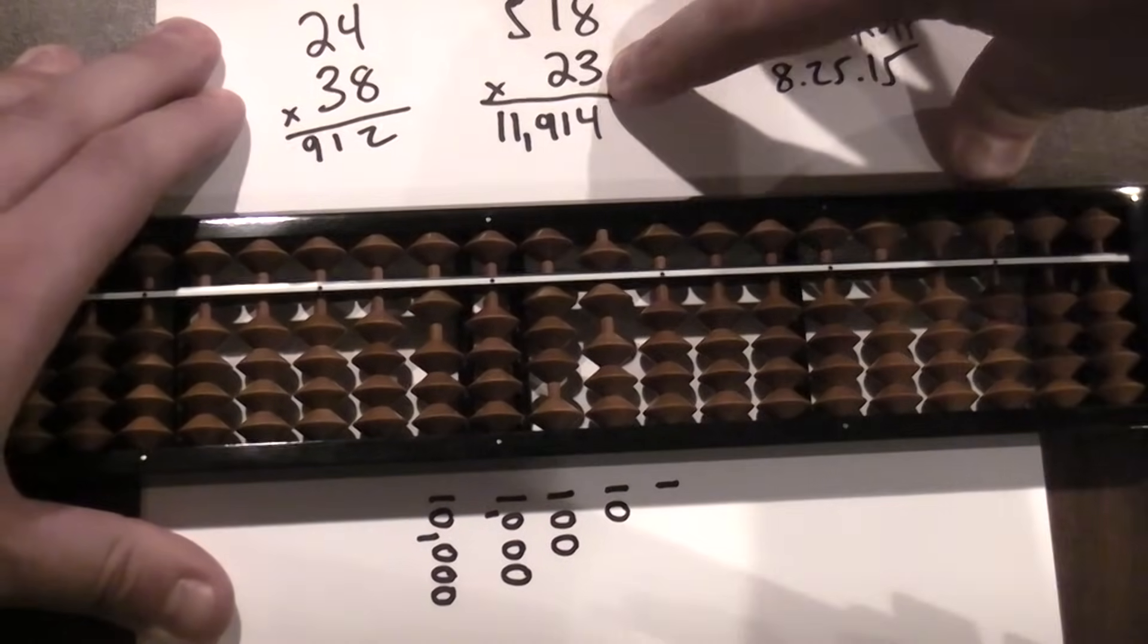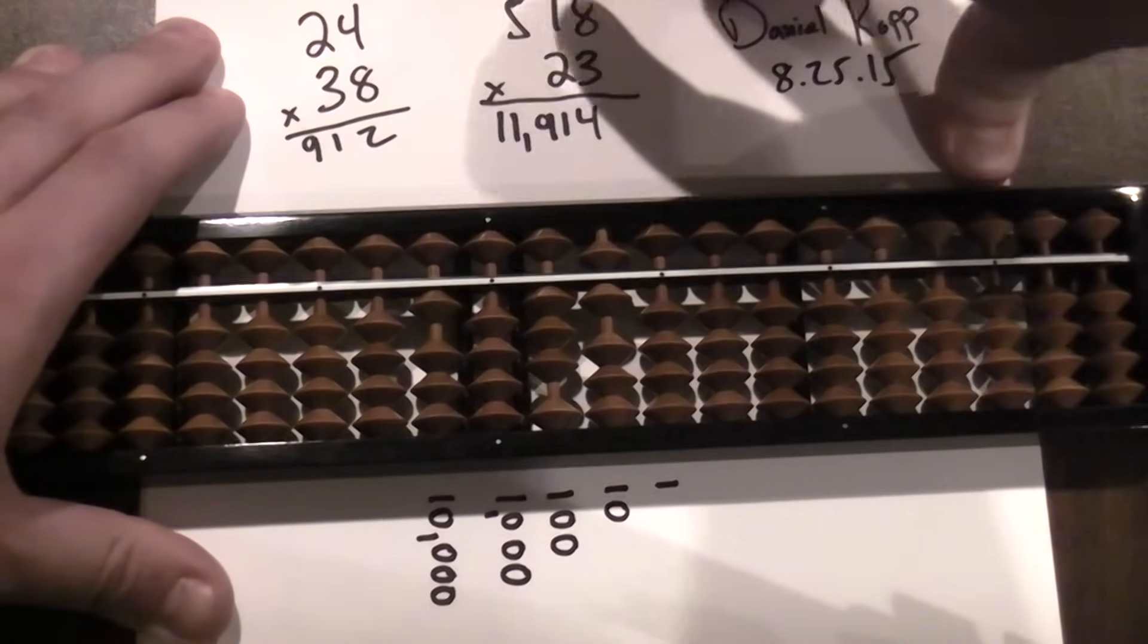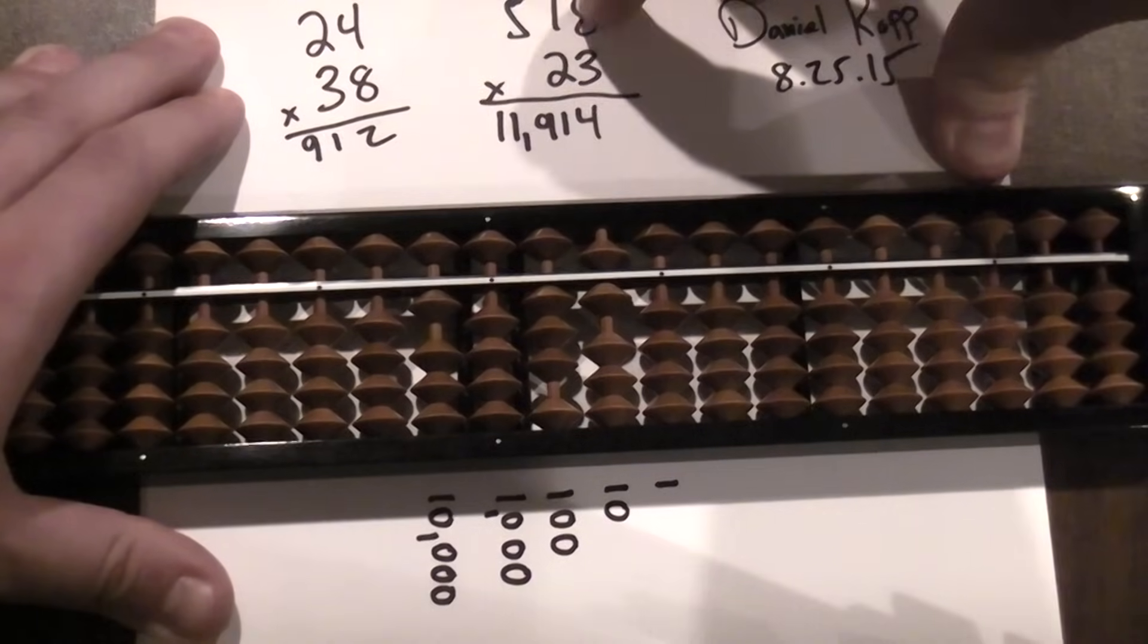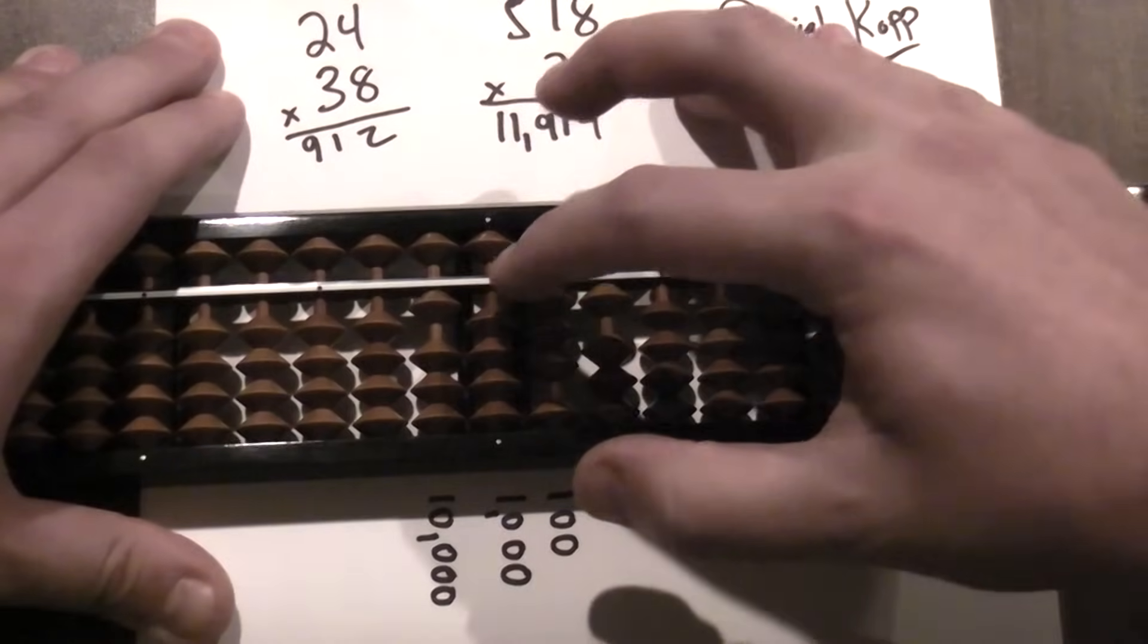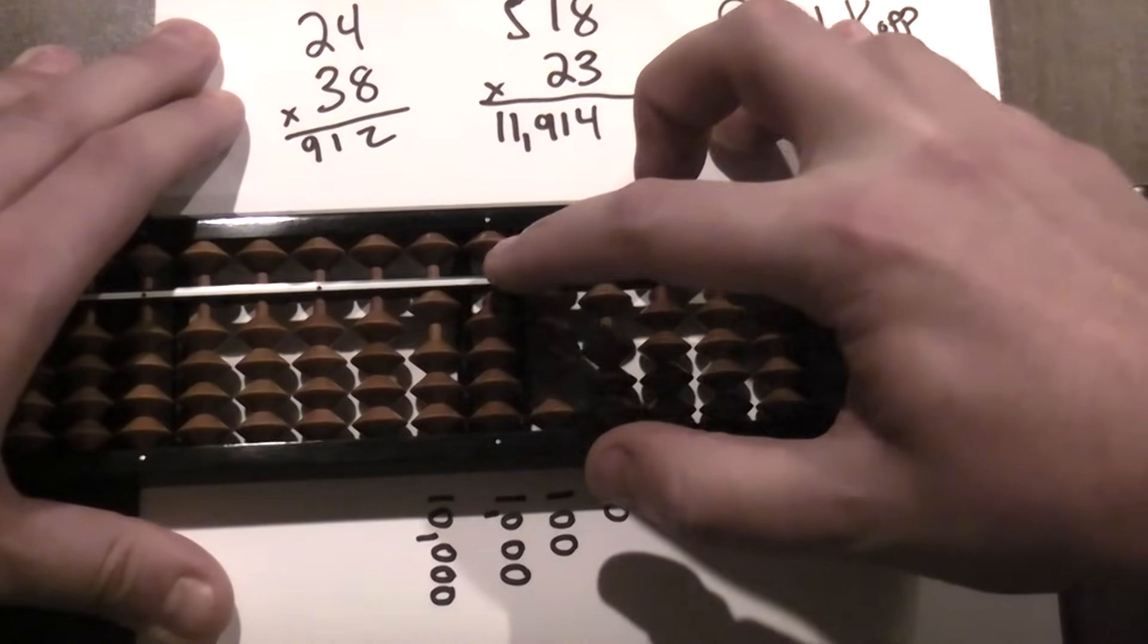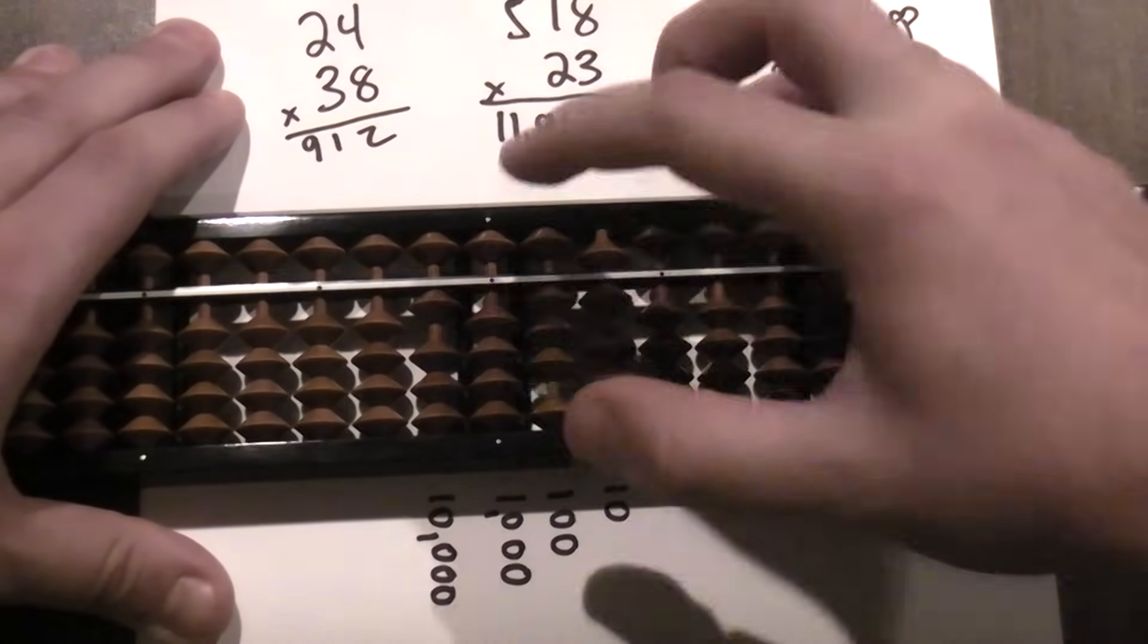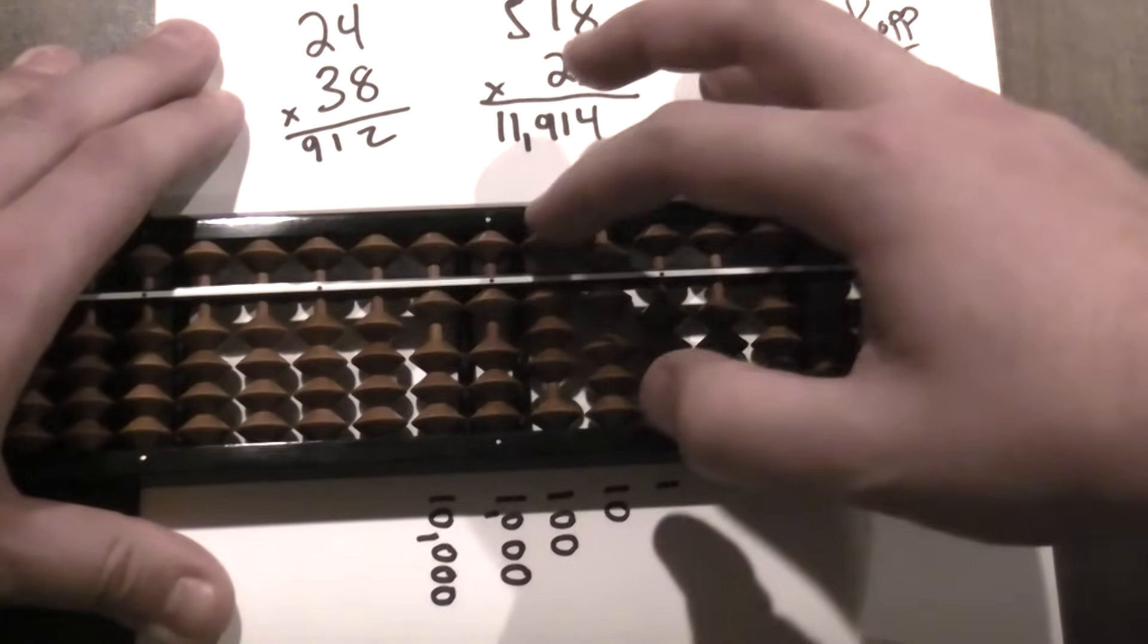Alright, now we're going to multiply by the three here. So how many places do I go over? One, two, three, four. I go over four places. One, two, three, four. Now three times five is fifteen. So I add one here, five here. Three times one is zero, three. So I go zero, three.